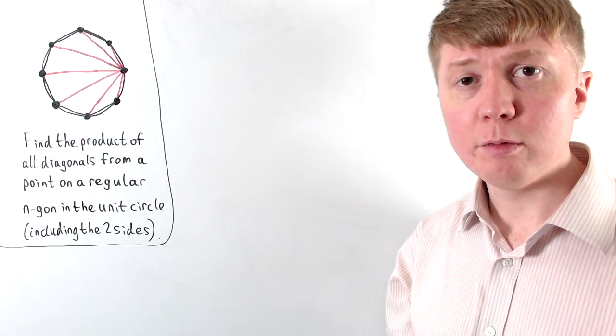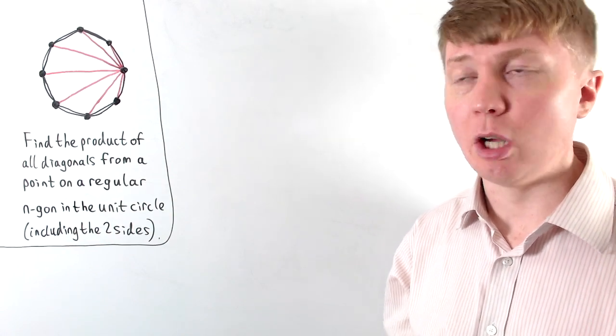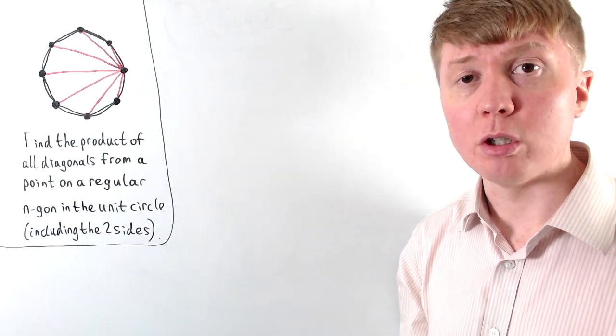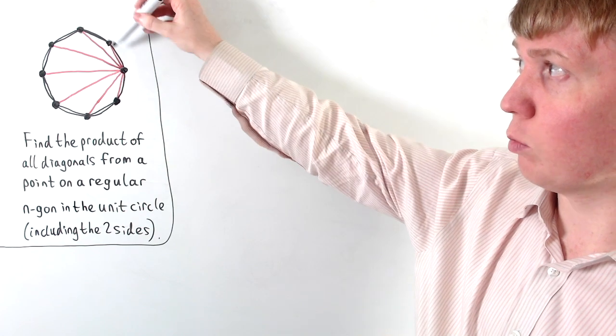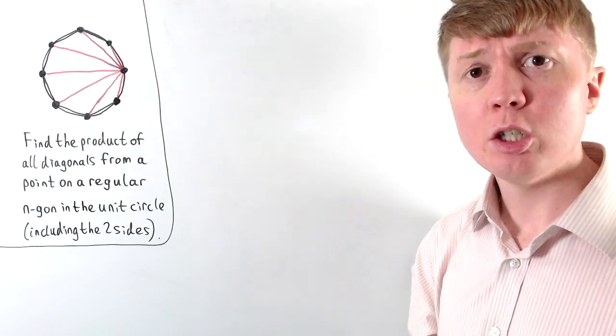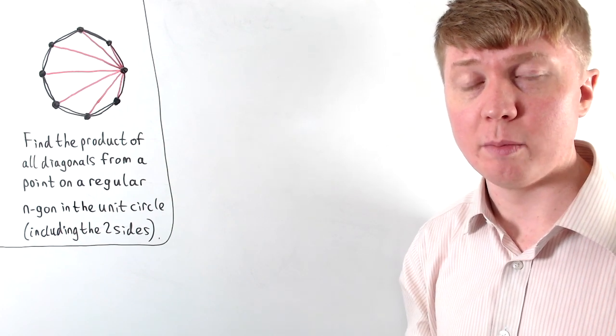We're going to solve this problem where if we have a regular n-sided polygon inscribed in a unit circle like this, we want to find the product of all of the diagonals coming out of one of its points, including these two edges here and here. We'll get a really nice answer to this problem in the end.